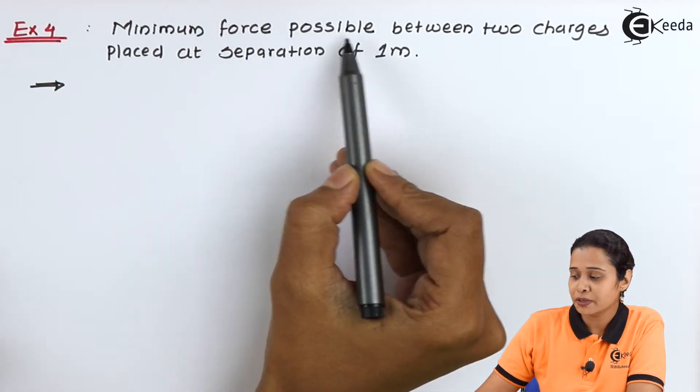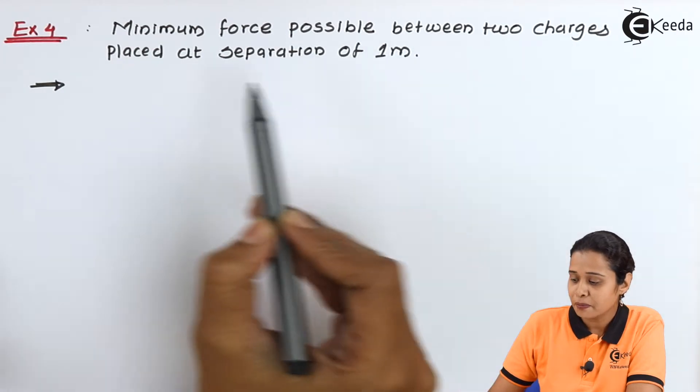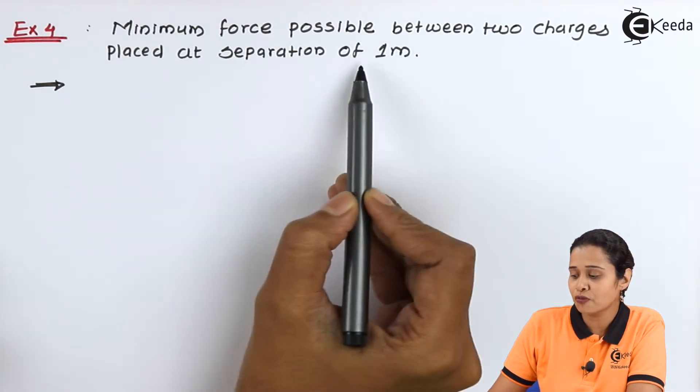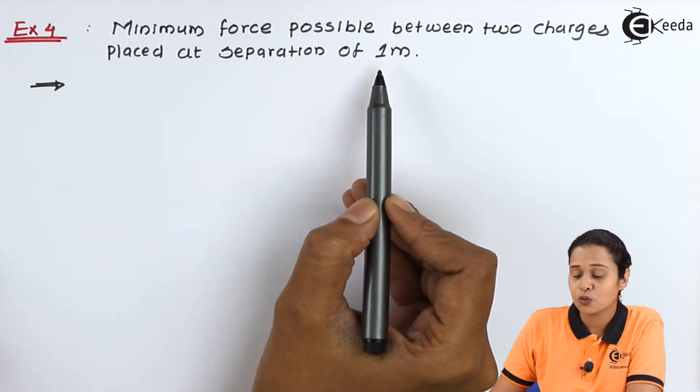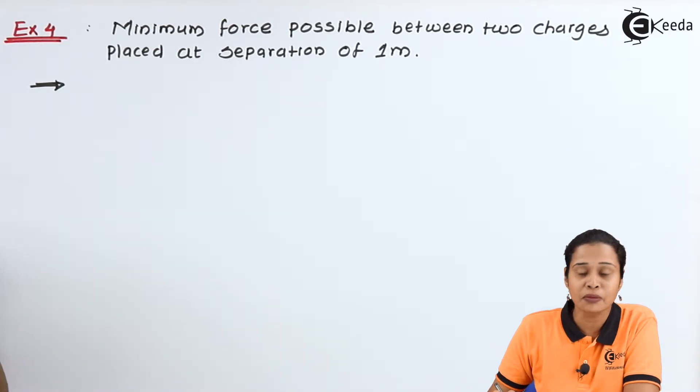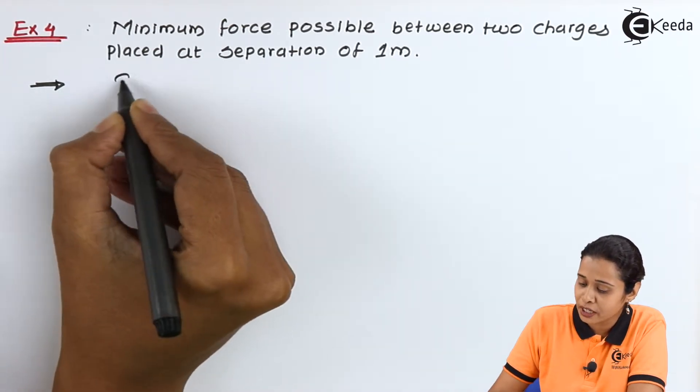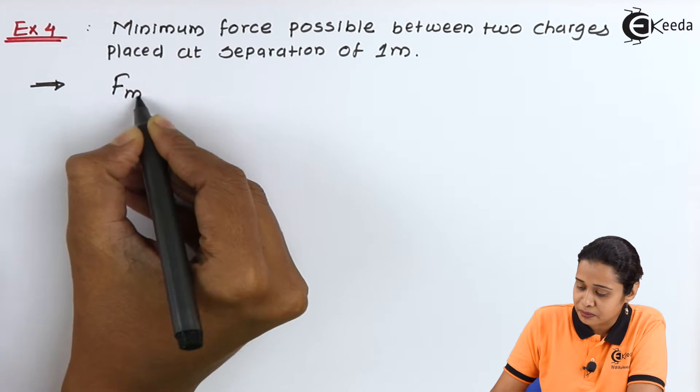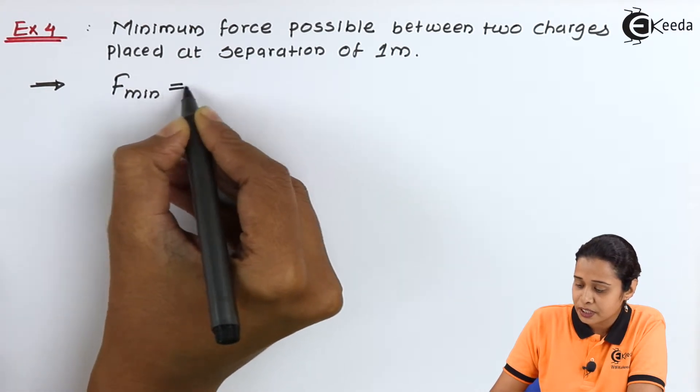Minimum force possible between two charges placed at separation of 1 meter. What will be the value of minimum force? We have to find out F minimum, its value.